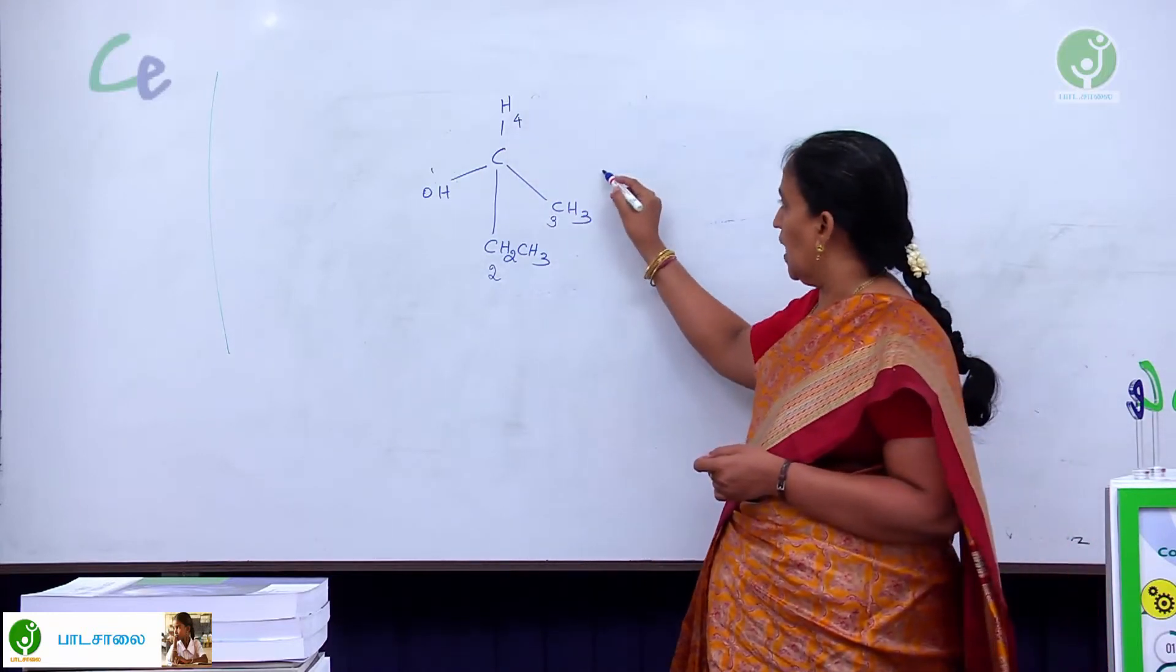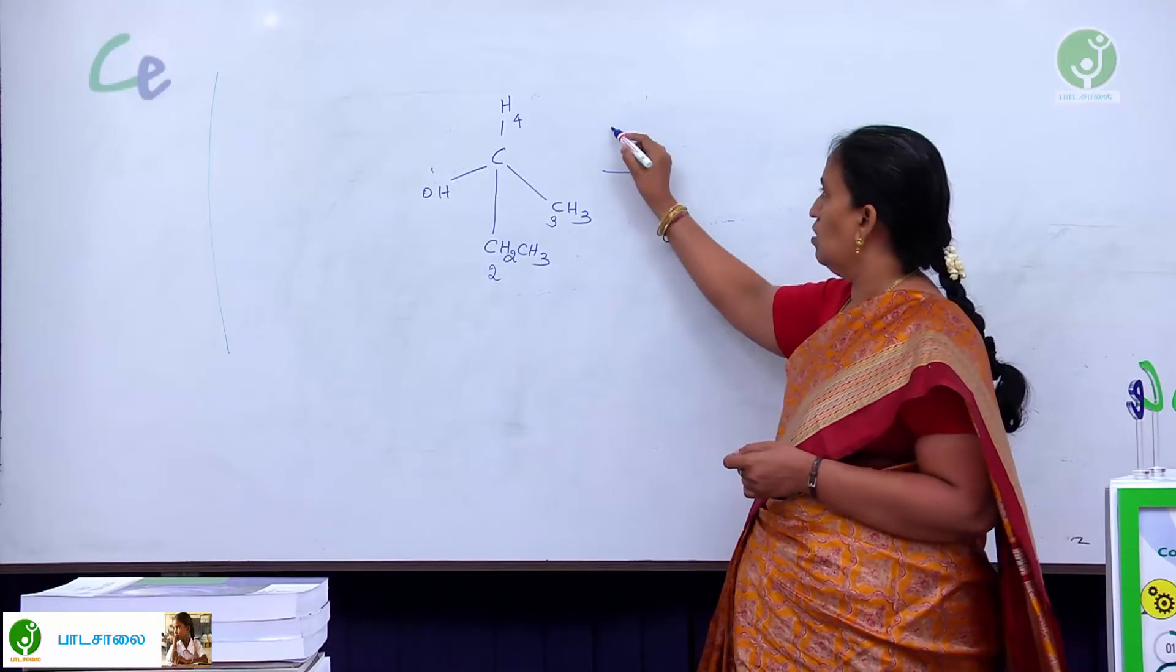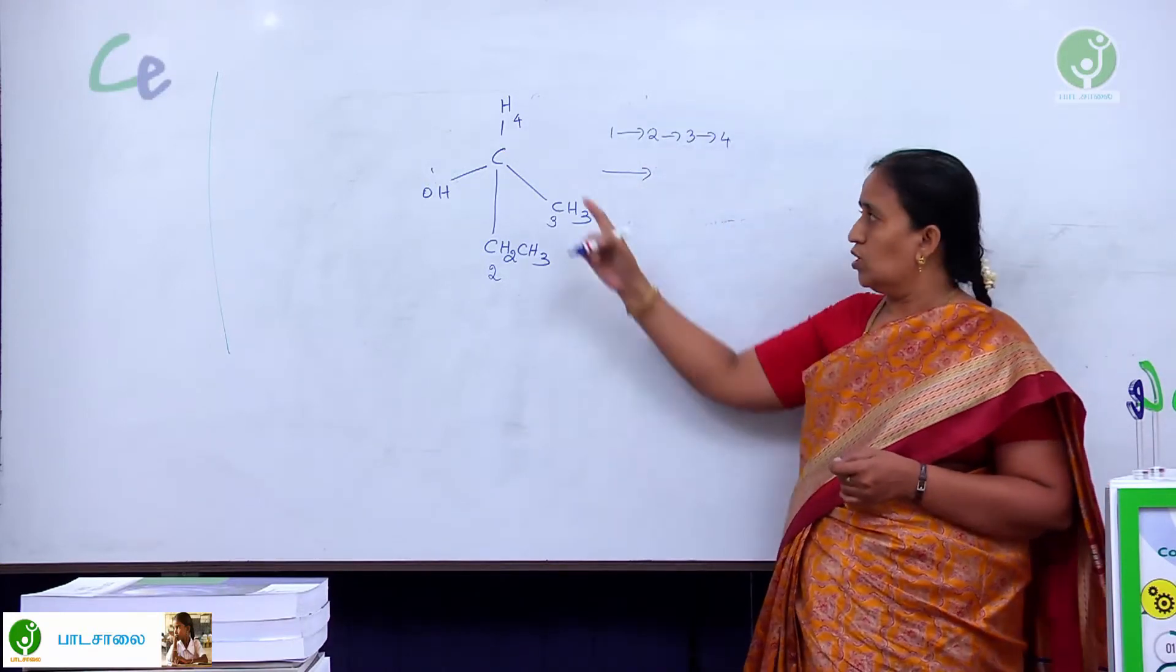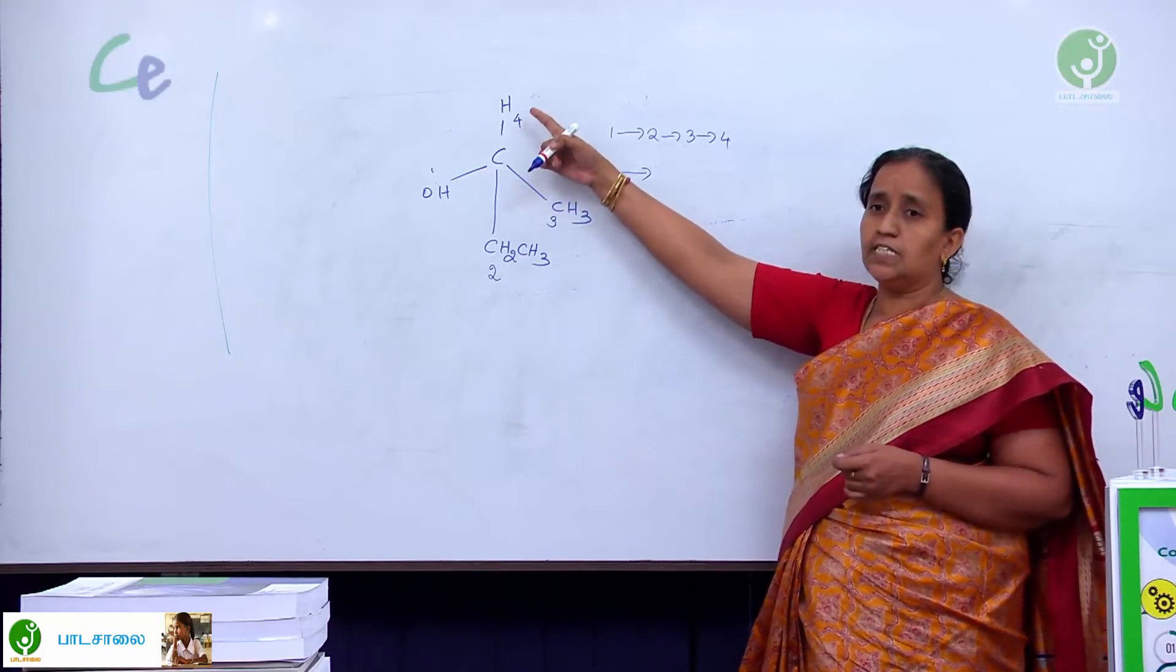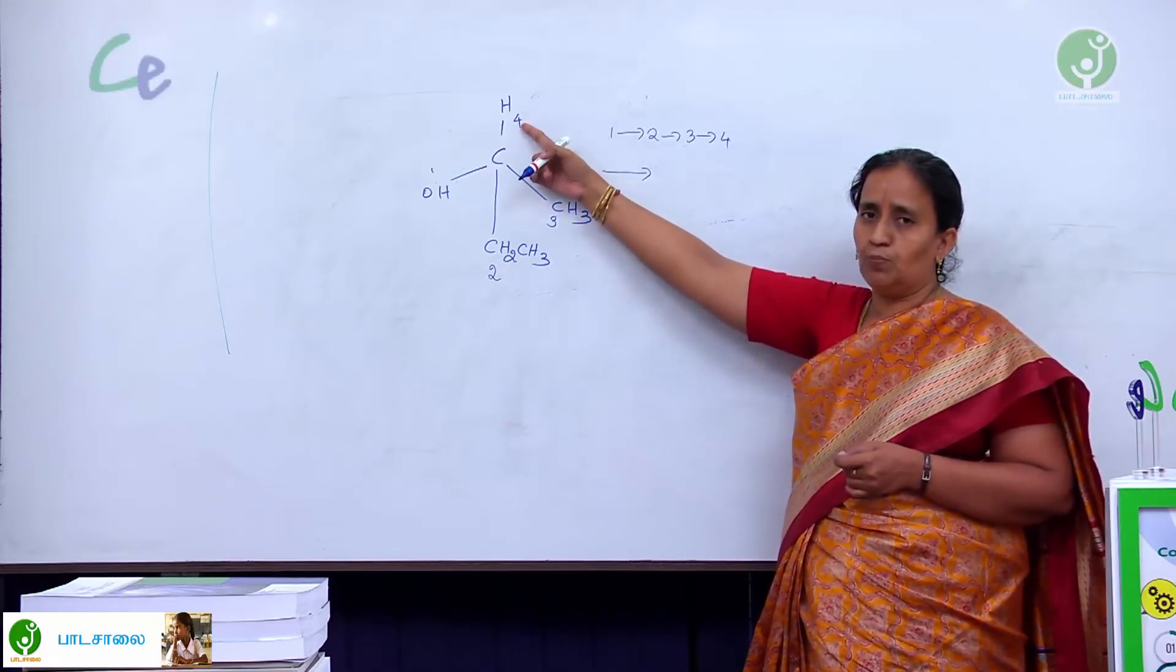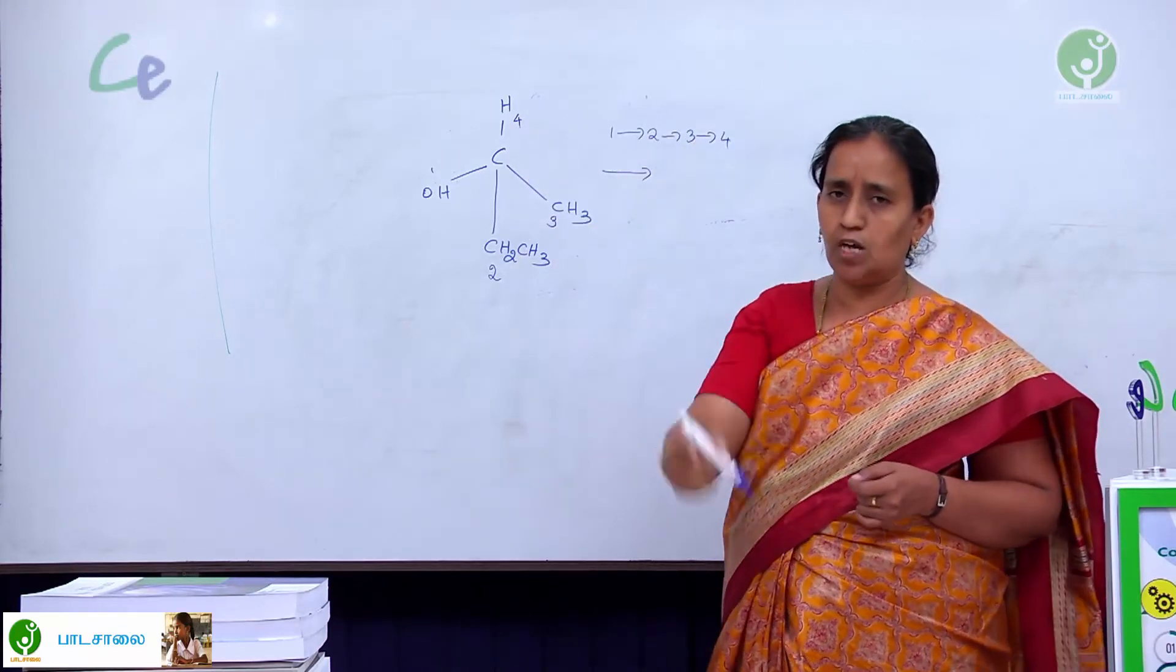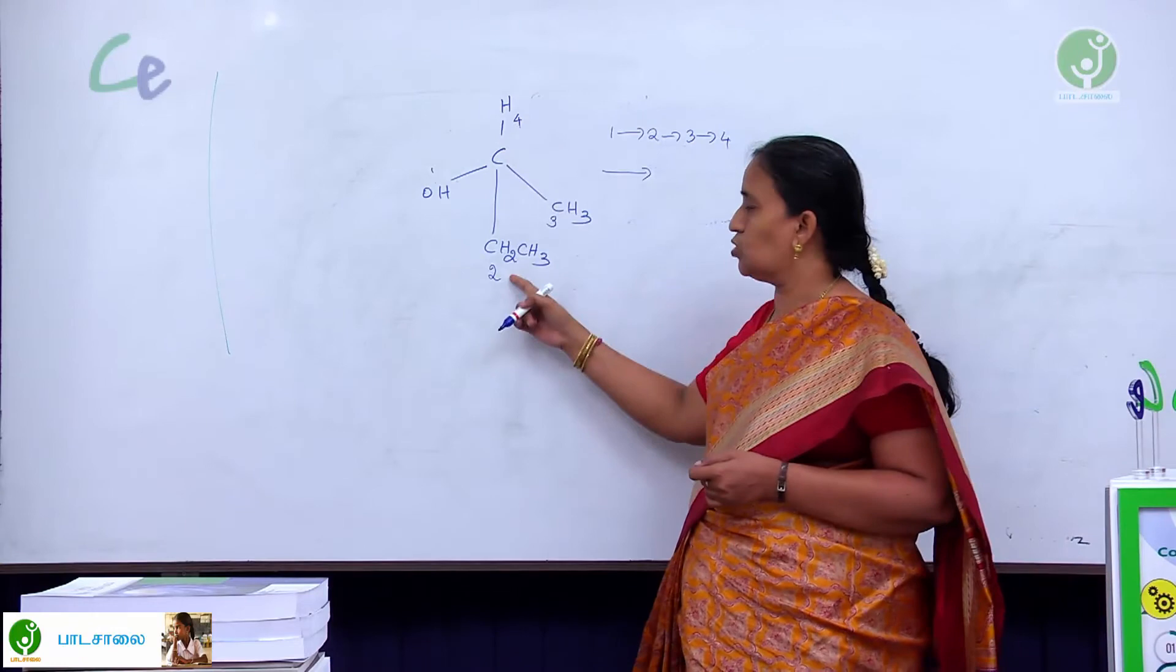What is the next thing? I have to rotate the molecule from 1 to 2 to 3 to 4. How I am going to do? Now, the fourth priority is at the top. Whenever you want to give priority, always the fourth atom, the least priority atom should come to the down. How we are going to make this to the down?